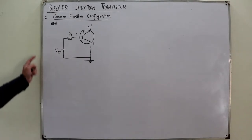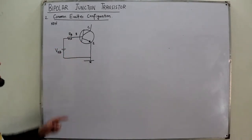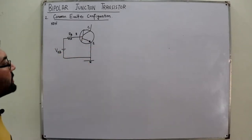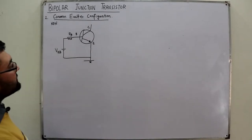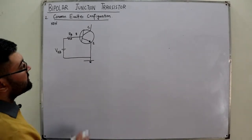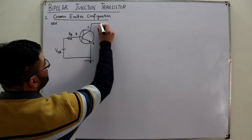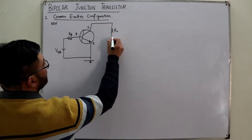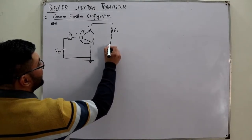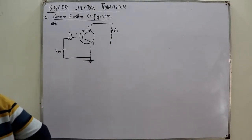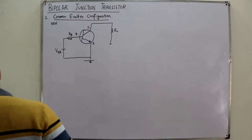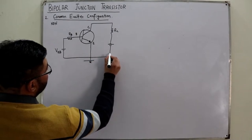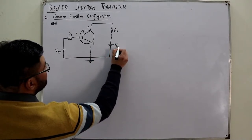The emitter has been grounded, so we're interested in the potential at B, which has to be positive. Similarly, the collector-base junction has to be reverse biased. With a current-limiting resistor RC, the collector has to be positive, and this supply is known as VCC, because it is biasing the collector terminal.